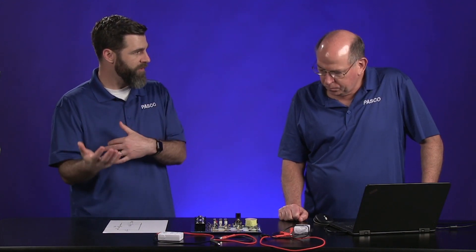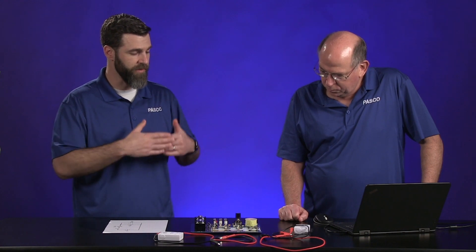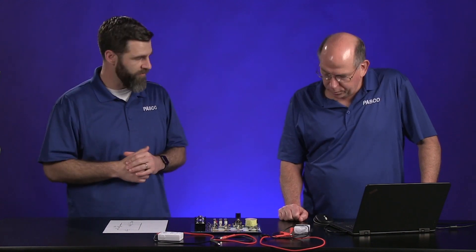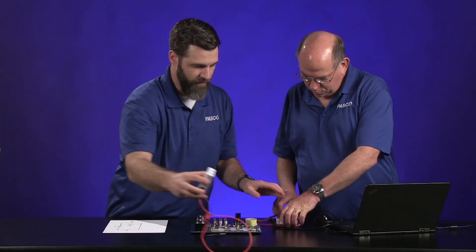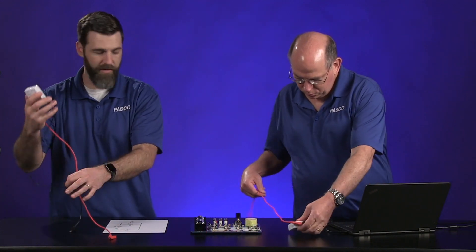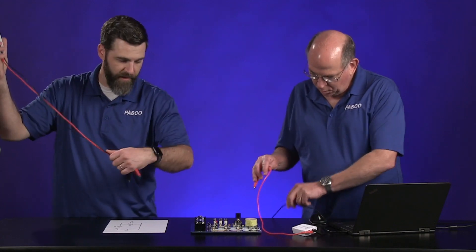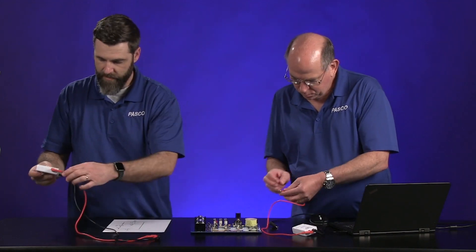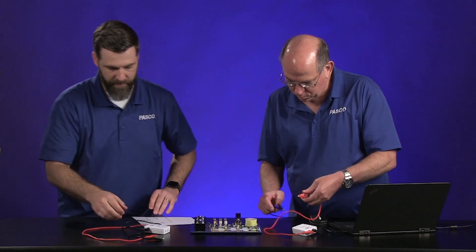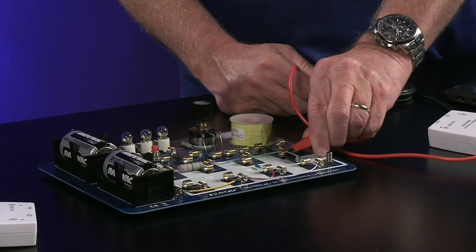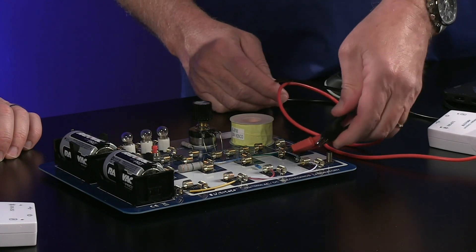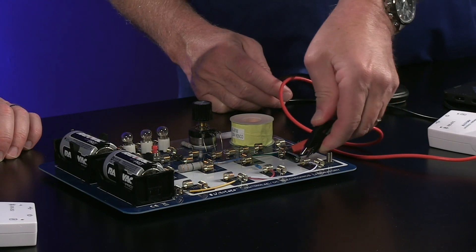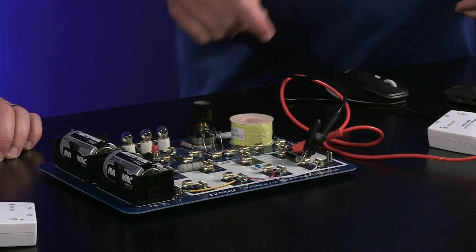So we're going to measure the voltage across the capacitor while also measuring the current through it. Yeah. So here, why don't I give you that voltage sensor and you connect it to the capacitor across it in parallel. And then I'm going to take this current sensor. Because the current doesn't really flow through the voltage sensor, it has a really high resistance to prevent that.